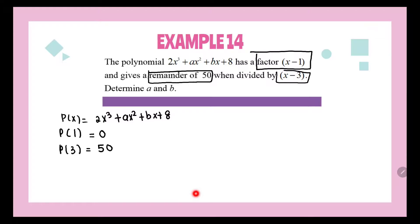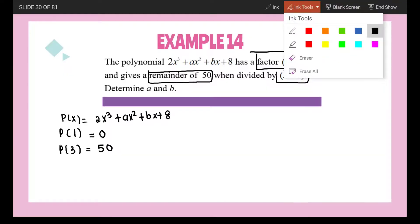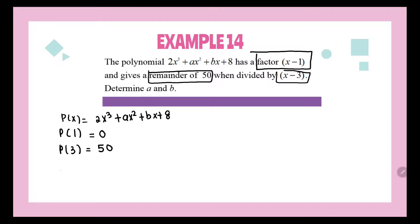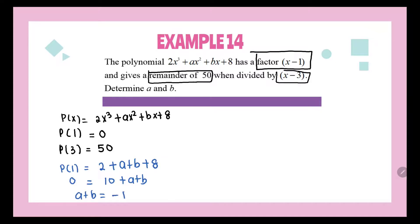Now we need to find A and B. We use the given information and substitute into our polynomial. Starting with P(1): 2 + A + B + 8 = 0. So 10 + A + B = 0, giving us A + B = −10, which is Equation 1.